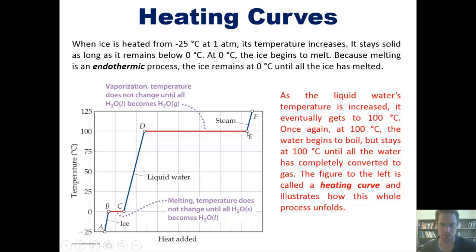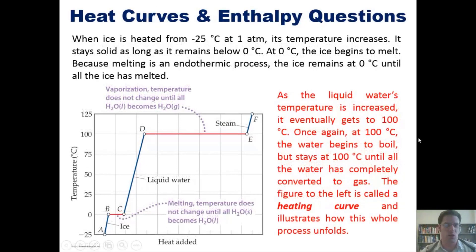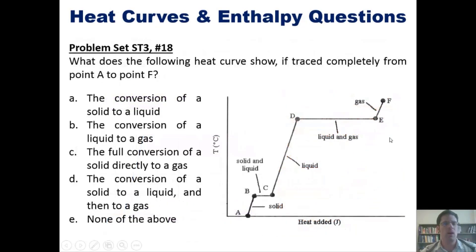Instead, all that heat energy goes toward converting the liquid water into gaseous water. That will continue until all of the water has completely converted into gas. After that point, additional heat energy will change the temperature of the now gaseous water. This figure, called a heat curve, illustrates how the whole process unfolds. Now here's a great lecture question: what does the following heat curve show if you trace it completely from point A to point F?